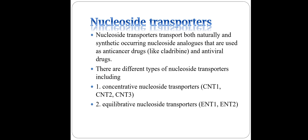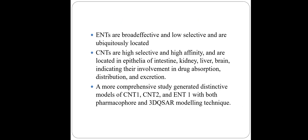Nucleoside transporters are of two types: CNT and ENT. CNT are further classified into three subtypes — CNT1, CNT2, and CNT3 — and equilibrative nucleoside transporters are further divided into ENT1 and ENT2. ENT transporters are broad-spectrum, low-selective, and ubiquitously located throughout the body, while CNT transporters are highly selective and high in affinity.